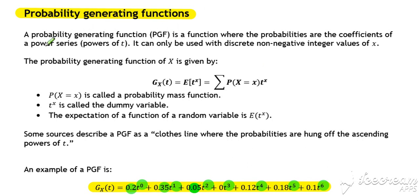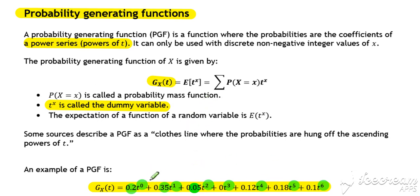This polynomial in t may sometimes be referred to as a power series. In general, a probability generating function is defined by the notation G_x(t) — capital G for generating function of some random variable x. t, or t_x, is known as a dummy variable, so t itself doesn't actually mean anything; it's introduced as a tool to hang powers off, and those powers represent the different values that x can take.